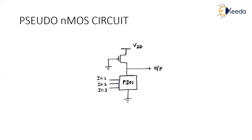This is the circuit of Pseudo-NMOS. In Pseudo-NMOS, I said that we have only a pull-down network which is on the bottom side. What is there in the place of your pull-up network? We have only a single PMOS with its gate connected to ground.